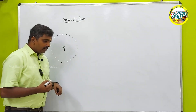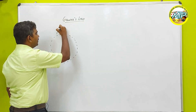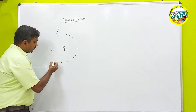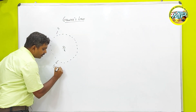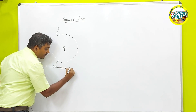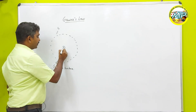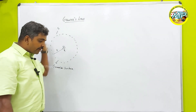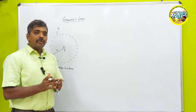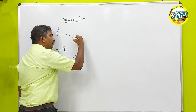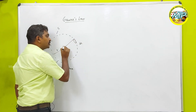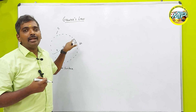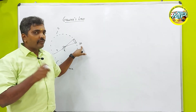The Gaussian surface has radius r, so the surface area of this Gaussian surface is S. My target is to find the net flux produced by charge Q. Instead of finding the total flux directly, I'm going to consider a small area element called dS, and find the flux through this dS element — that is, the number of field lines passing through this small area element.